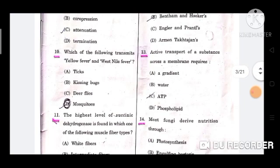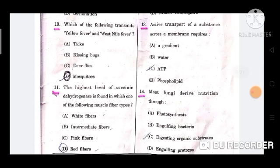Question number 13: Active transport of a substance across a membrane requires? Correct option is option number C, ATP.